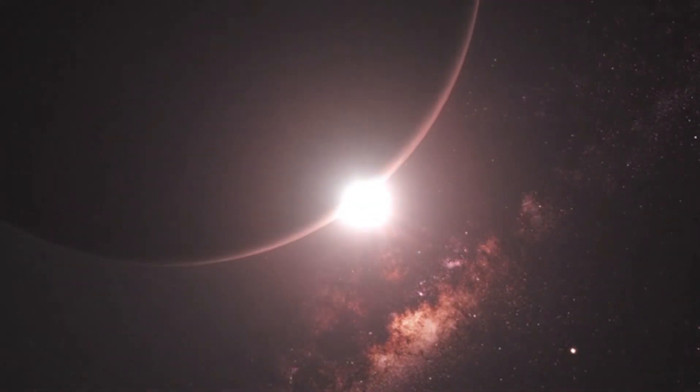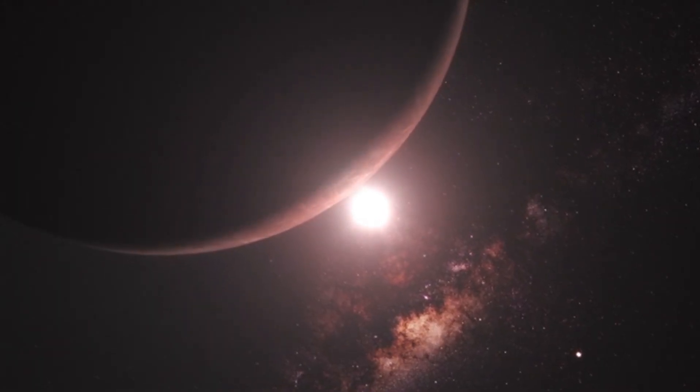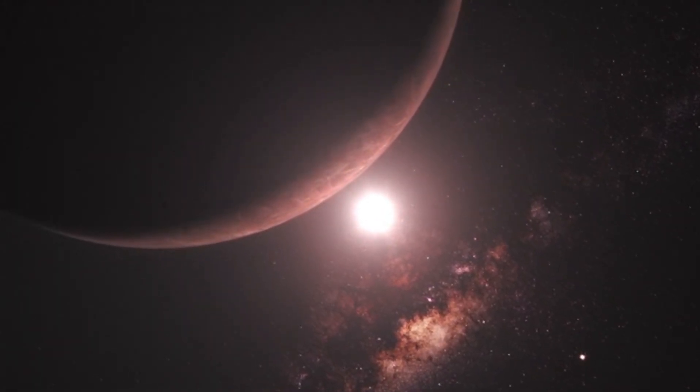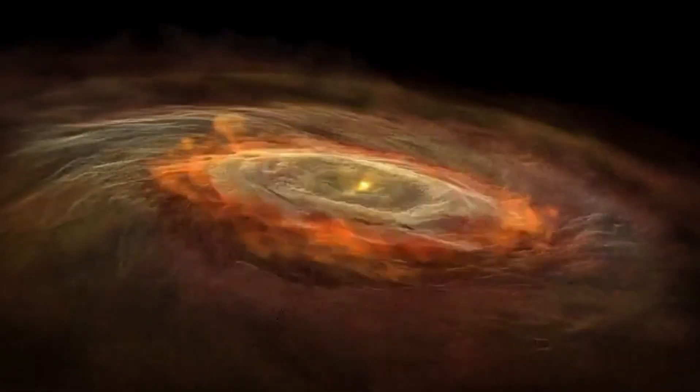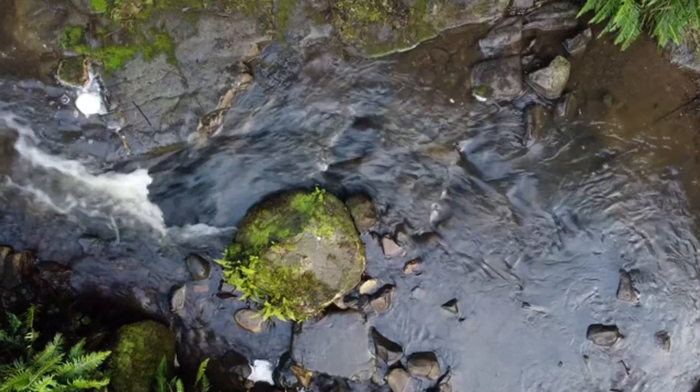Supernovae are among the most energetic explosions in the universe, releasing more energy in seconds than the sun will in its entire lifespan. Such an explosion would mark the end of Betelgeuse as we know it, resulting in the formation of a neutron star or black hole, depending on the star's remaining mass.